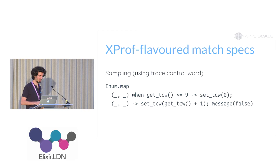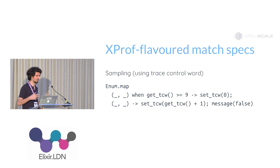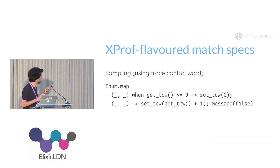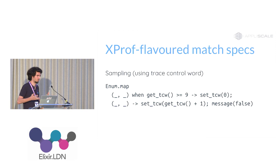The most complex example is sampling implemented with a match specification. There is something called the trace control word in the Erlang VM — a global integer that can be read and written from both match specs and Elixir code. This match spec captures every 10th function call — downsampling. If Enum.map is called 100,000 times, it will only capture 10,000 calls. The first match spec clause checks if the control word is nine or above, resets it to zero and does the default tracing behavior; otherwise it increments the counter by one and sets 'message false' to silence that call, generating no trace message.